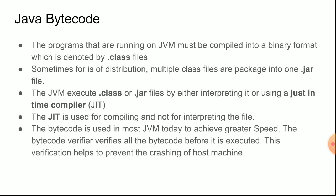Programs running on the JVM must be compiled into a binary format denoted by dot-class files. When you write a Java program, you save it as a dot-java file. When the compiler converts it, the dot-java file becomes a dot-class file, which contains bytecodes — that is ones and zeros the machine can understand. For ease of distribution, multiple dot-class files are packaged into one dot-jar file.